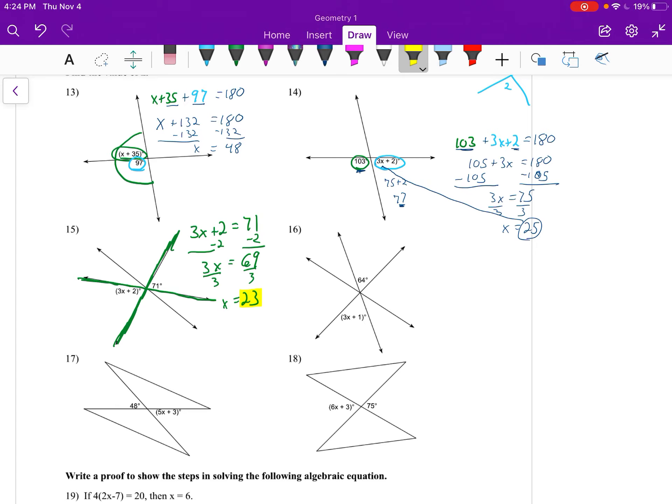Again, we could take 23 and put it in for x. So let's try this out. We have 3 times 23 plus 2. 3 times 23 is 69 plus 2, does equal 71, and they are equal to each other. So we can check our answers.